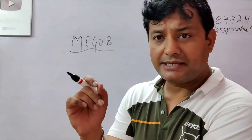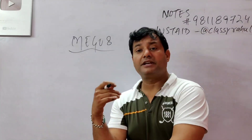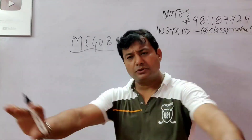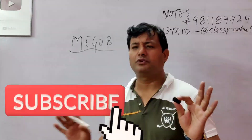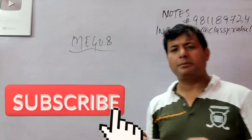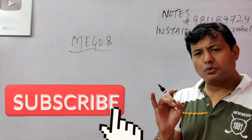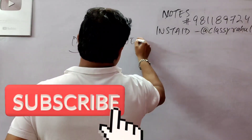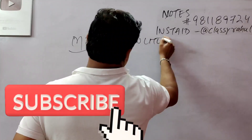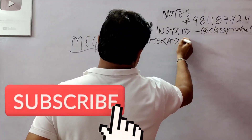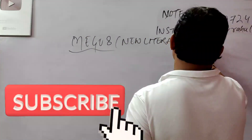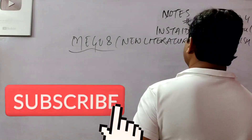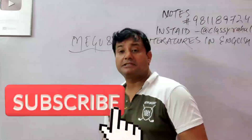We need to have the poetry section — it's in Block 1. Seriously, we need to have the poetry section. No need to go elsewhere if it's not clear. We need to find everything on New Literatures in English.